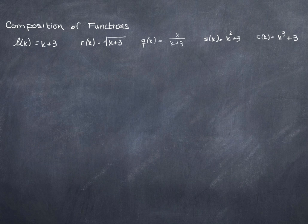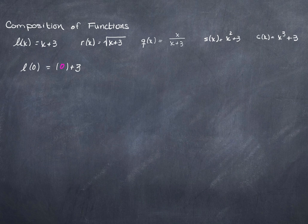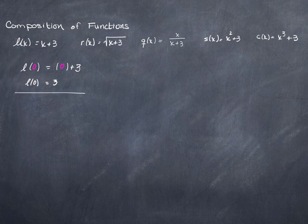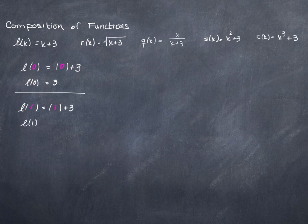By way of reminder, what is L of 0? That just means take L of x and plug in 0 where you used to see an x. So you can see what we're plugging in is the 0. When you do that, you get 0 plus 3, or 3. So L of 0 is equal to 3. What's L of 1? L of x is x plus 3, so L of 1 will be 1 plus 3, which gives us L of 1 is equal to 4.